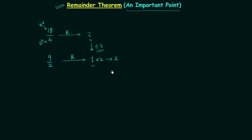So this is an important point. Whenever you solve any question related to the calculation of remainder, always try to simplify the division — like we simplified here. But you have to remember by what number the remainder is getting divided, and whatever that number is, you have to multiply it back to the final remainder.